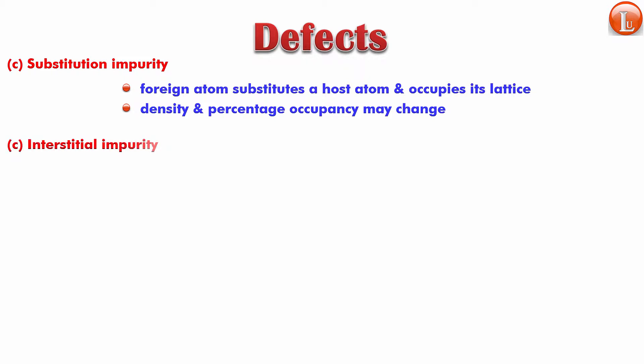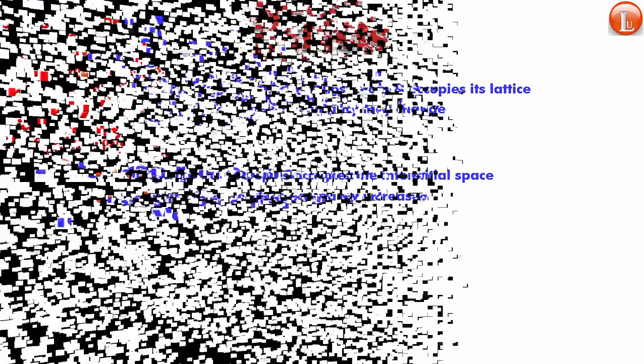And the last one is the interstitial impurity. This is the fourth type. Interstitial impurity basically means that a new atom comes in and occupies the interstitial space. So a foreign atom occupies the interstitial space. The density and the percentage occupancy will definitely increase in this case. Now let's talk about defects in the case of ionic structures.